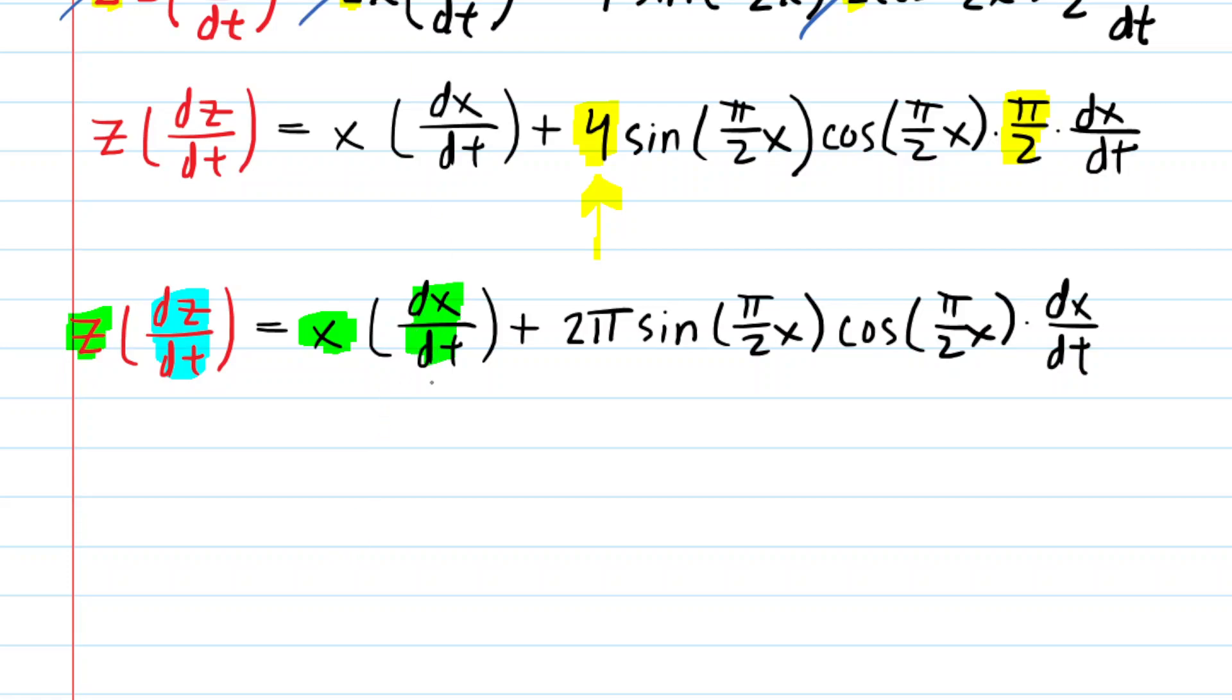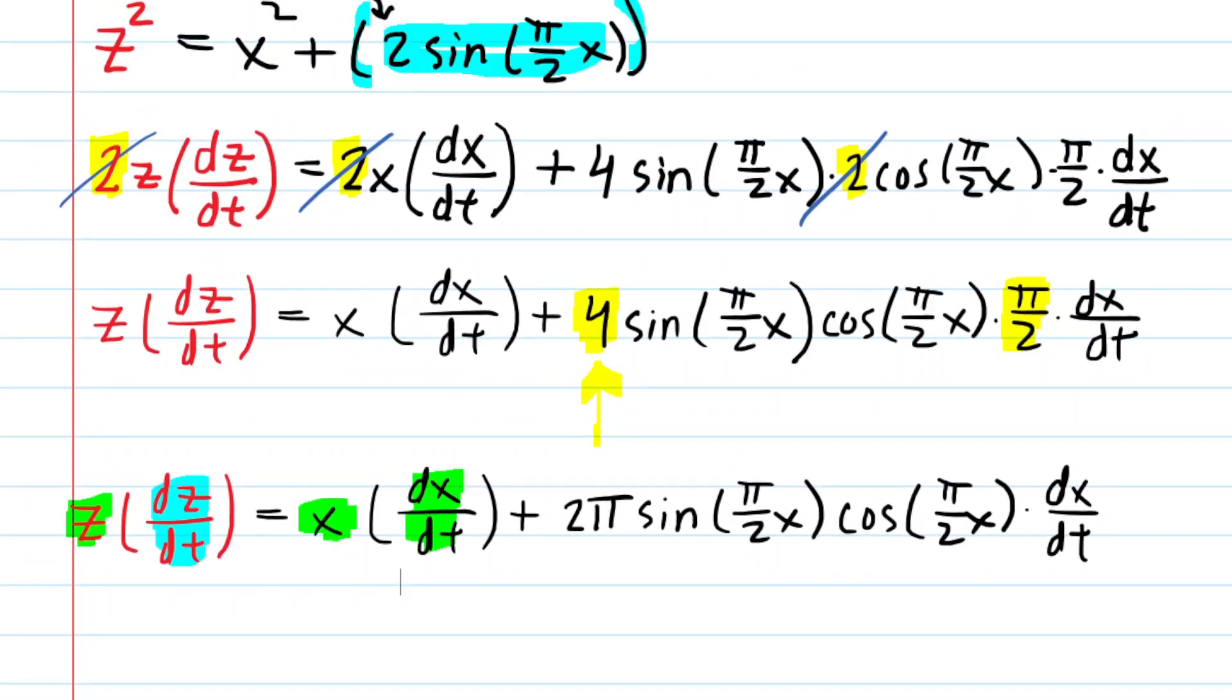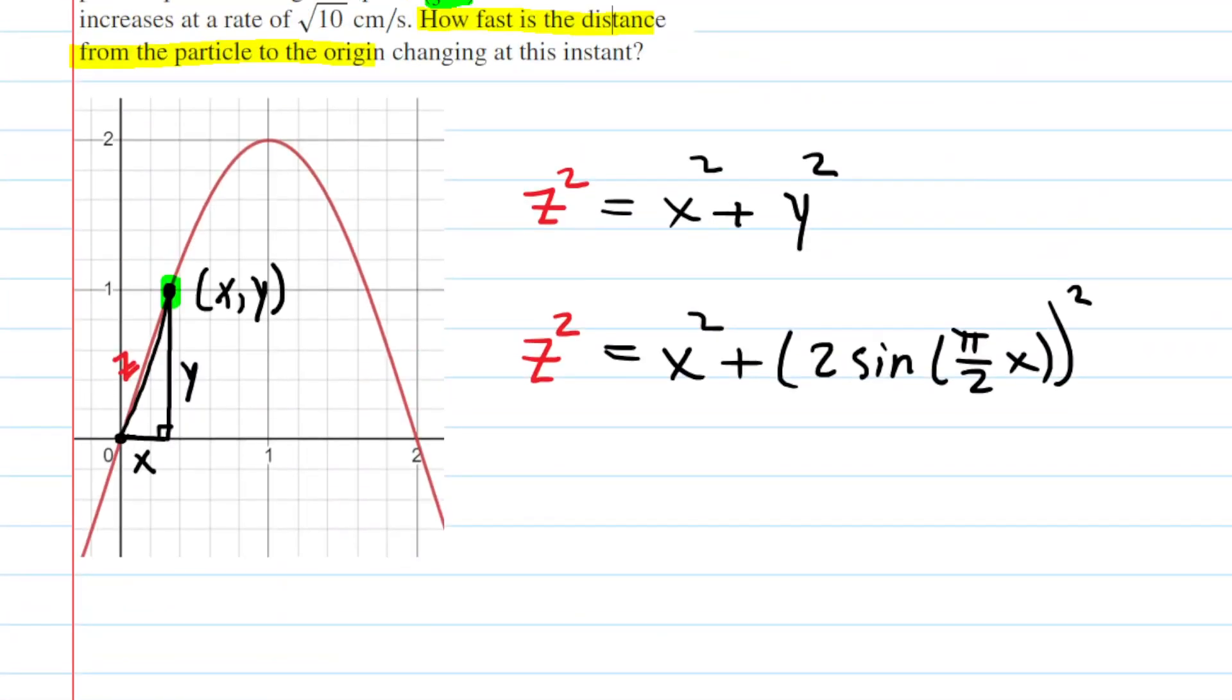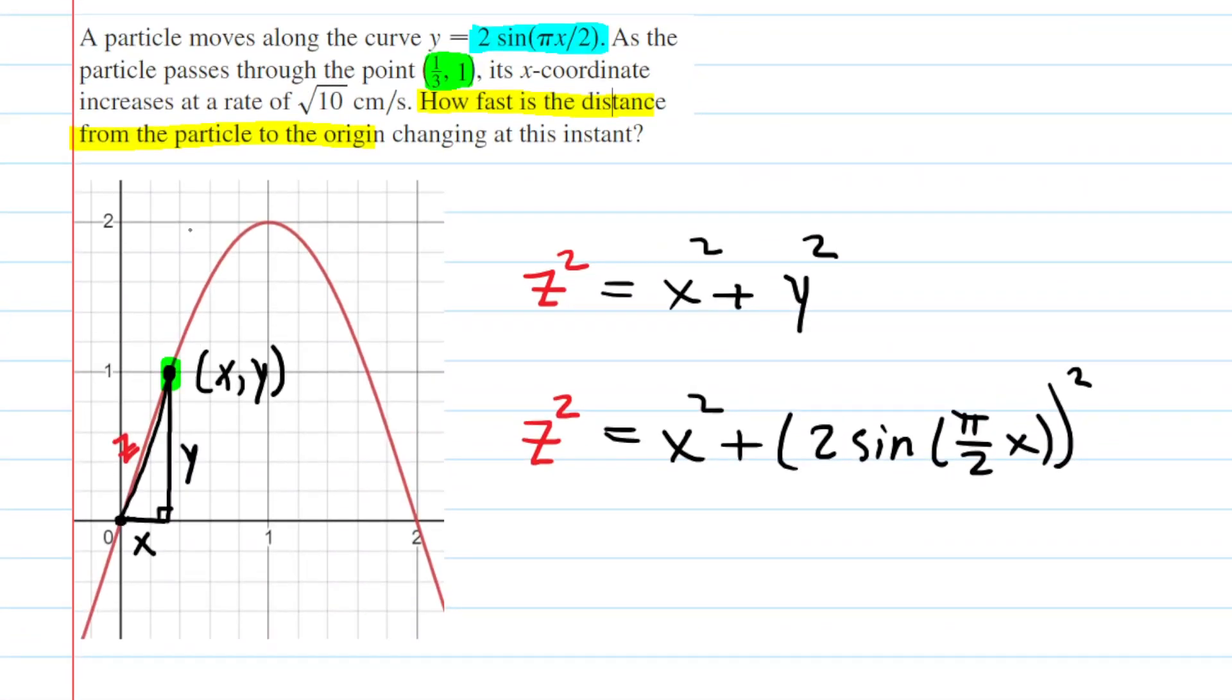So we know x—go back to the picture—x had a value equal to 1/3. We just go back to the information. Remember, the point had an x coordinate of 1/3. So we do know x is equal to 1/3.